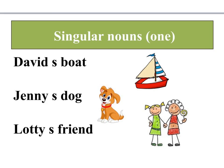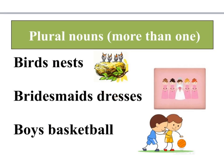In the first one, we have David's boat — the owner is David, so the apostrophe goes before the 's' on David. The second one is Jenny's dog — Jenny owns the dog, so the apostrophe goes before the 's' of Jenny's. Lottie's friend — the apostrophe goes in front of the 's' to show that Lottie is the owner.